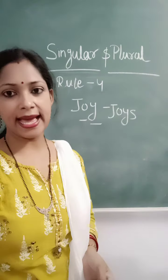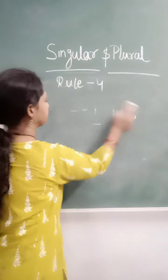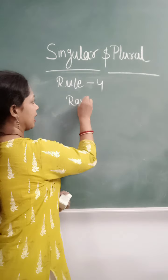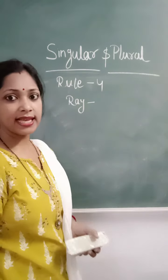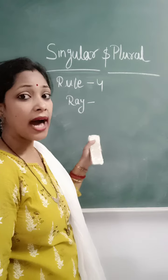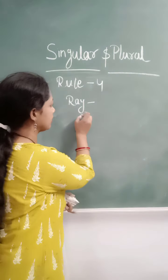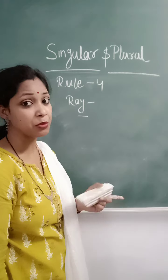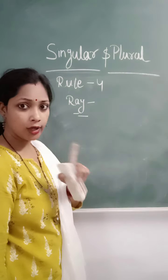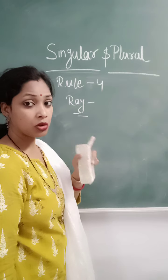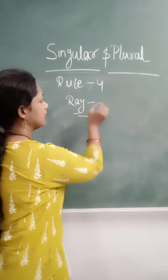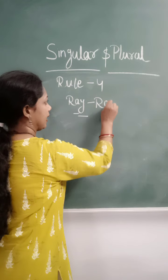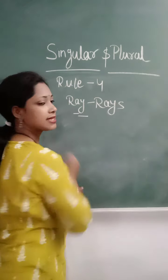Let's take another example — the word is ray, R-A-Y. The sun has its ray. Just look at the word: the last letter is Y and before that is a vowel, not a consonant. So it will be R-A-Y-S — rays.